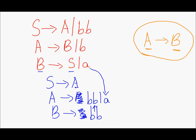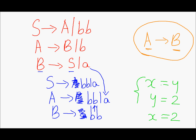In place of this A, we can write terminal string BB as well as A. It's more like this: if X equals Y and Y equals 2, then X equals 2. From these two steps we get this step, and this is exactly what we did here.